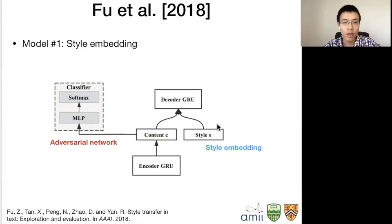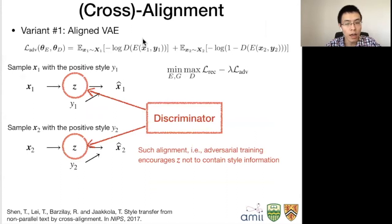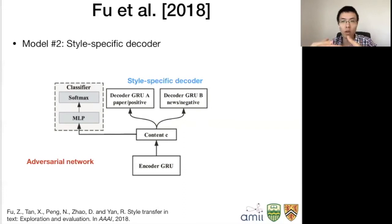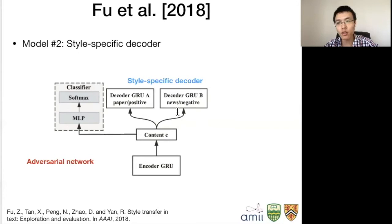The next paper is the AAAI 2018 paper by Fu et al. with two variants. The first variant uses style embeddings — externally specified — and matches the content space by adversarial networks, essentially the same as the aligned VAE. The second variant uses style-specific decoders: if you generate a positive sentence, one specific decoder handles it; if negative, another decoder handles it. Each decoder is only aware of one style and won't be contaminated by others. However, this requires more samples to train each decoder, otherwise they may overfit.